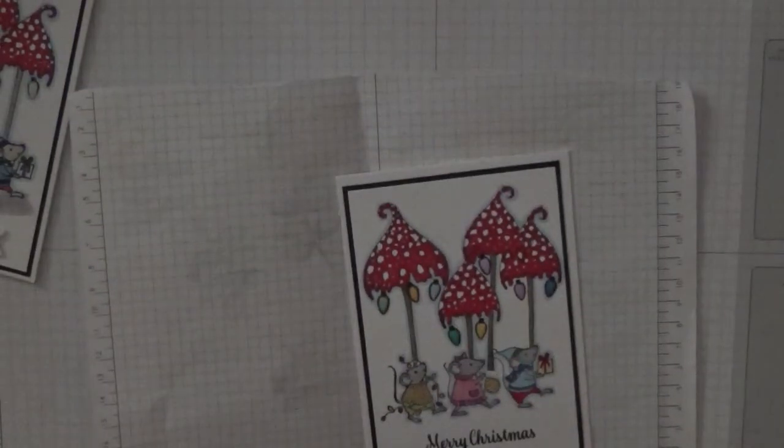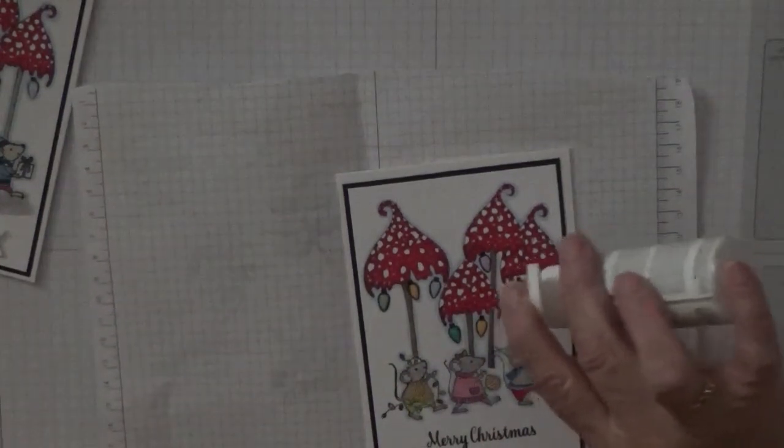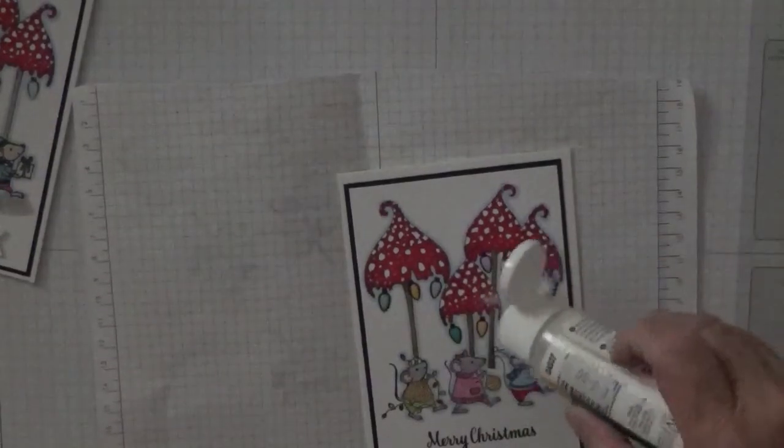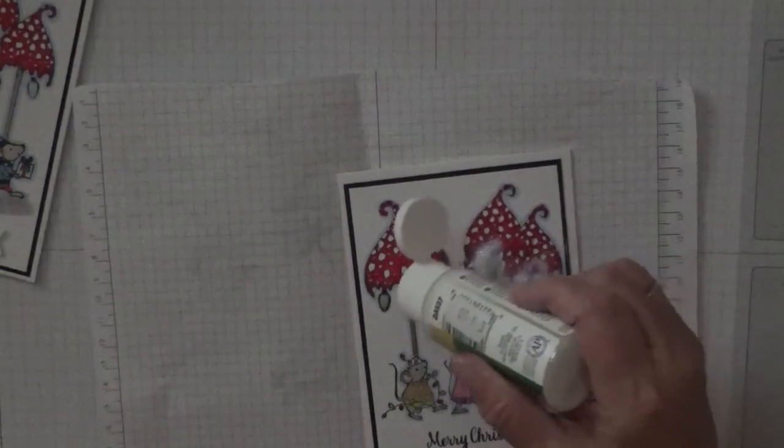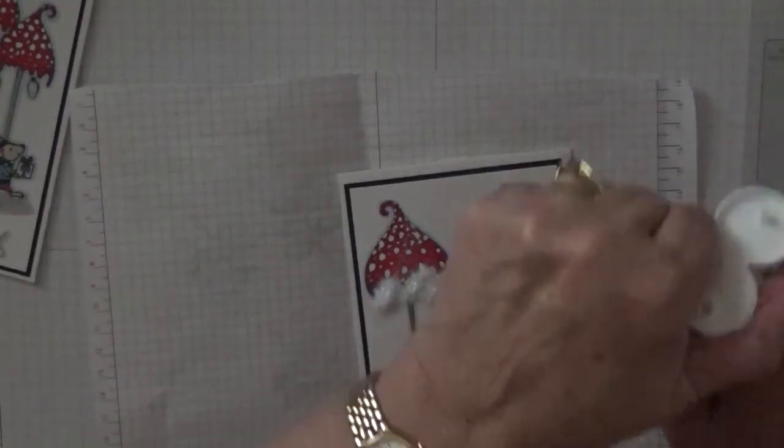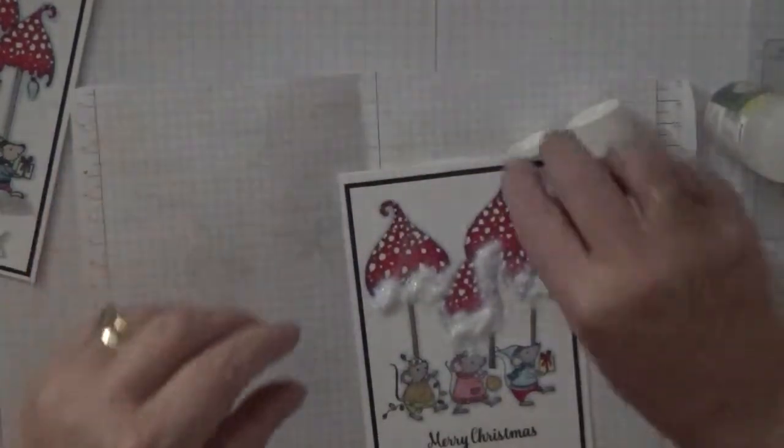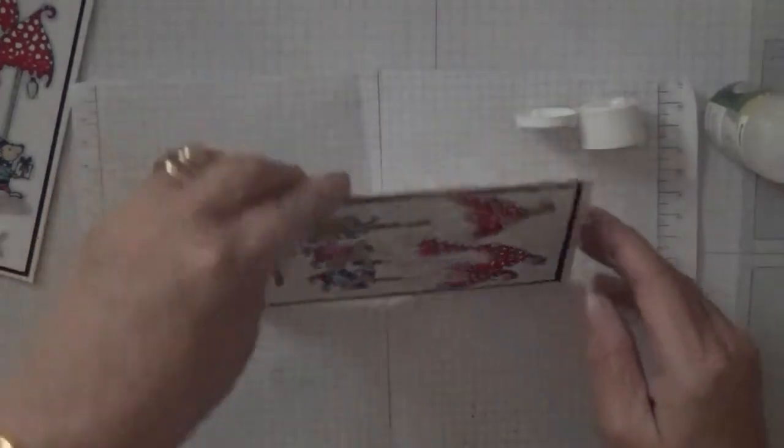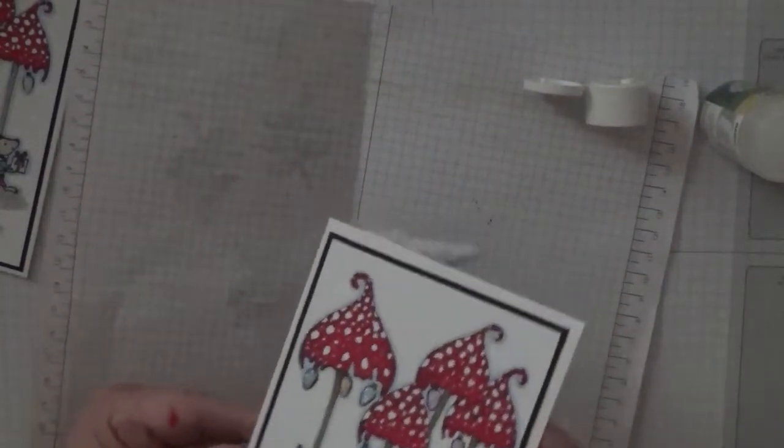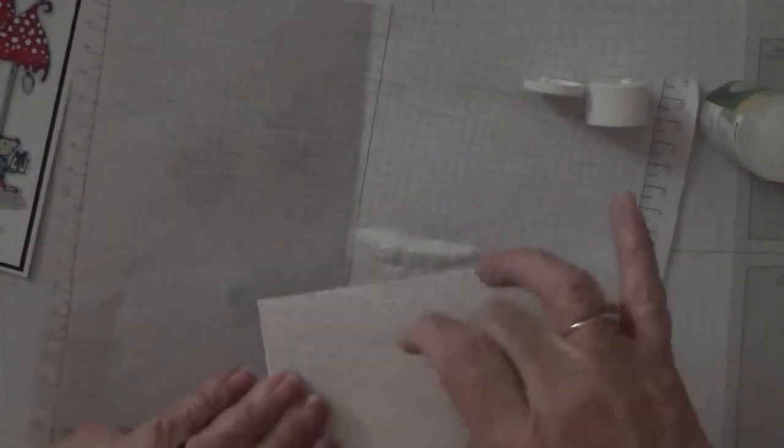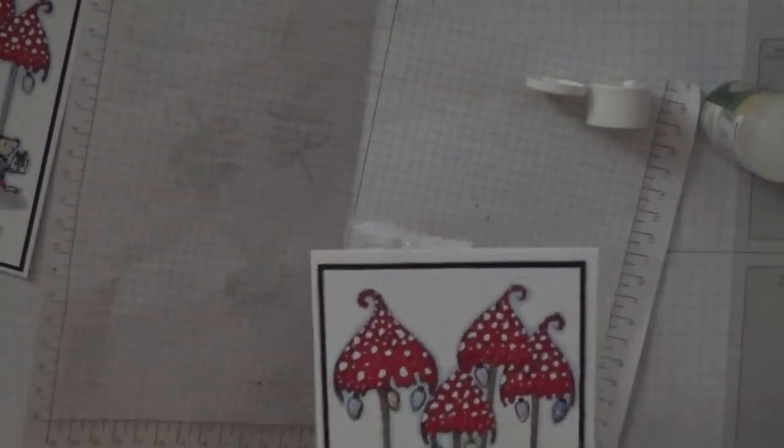So what I'm going to do is sprinkle glitter all over the lights. This is why I don't like glitter, it goes everywhere. And then we'll just quickly tap it off. Put that to one side, put this back in the top, and then get rid of that in the bin.